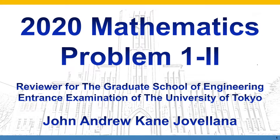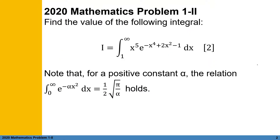In this video, we will solve the 2020 mathematics problem 1-2, and this will serve as a reviewer for the Graduate School of Engineering and Trans Examination of the University of Tokyo. The problem asks: find the value of the following integral — I equals the integral of x to the fifth power times exponential of negative x to the fourth power plus 2x squared minus 1, dx, where the integral is evaluated from 1 to infinity.